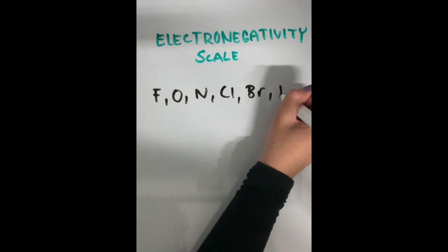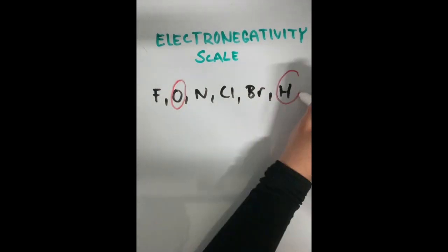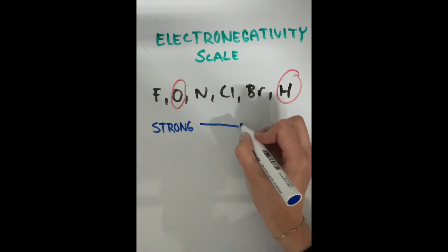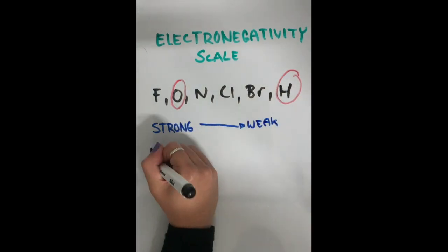Oxygen is more electronegative than hydrogen. This results in unequal sharing of the electrons forming an electrical dipole.